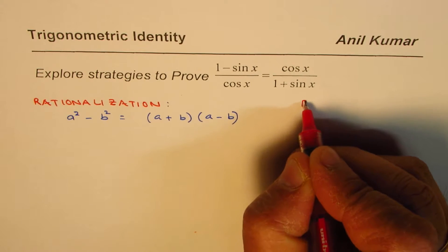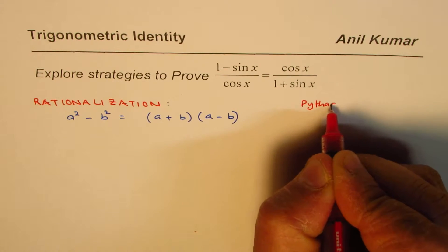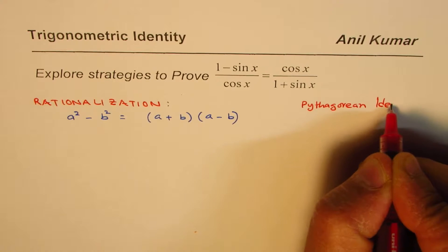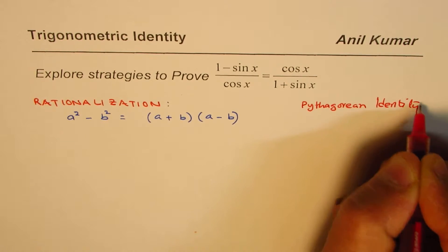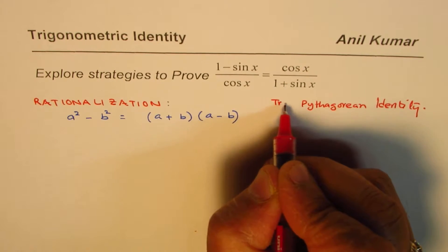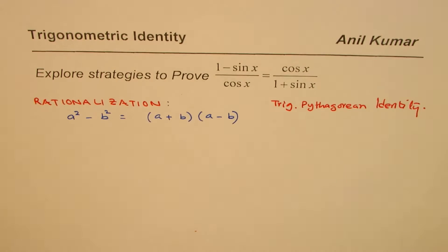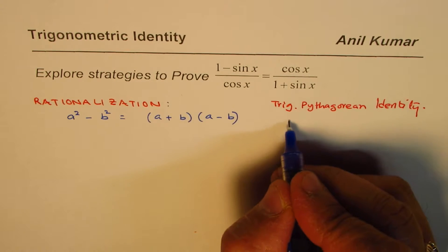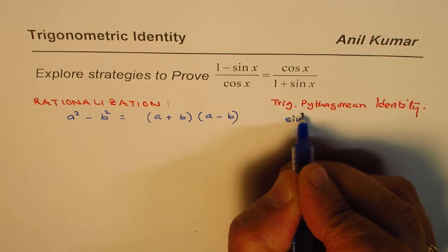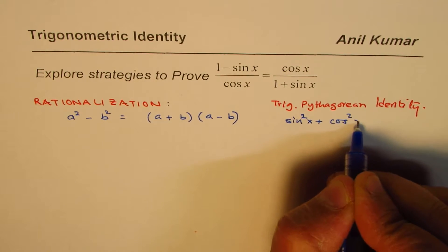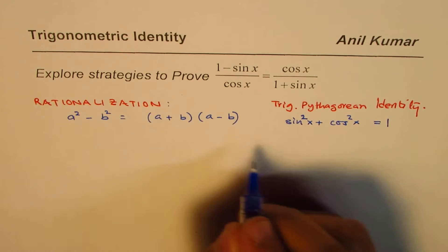Now, along with this we use the Pythagorean identity, right? I should write trigonometric Pythagorean identity, which is sin²x + cos²x = 1.